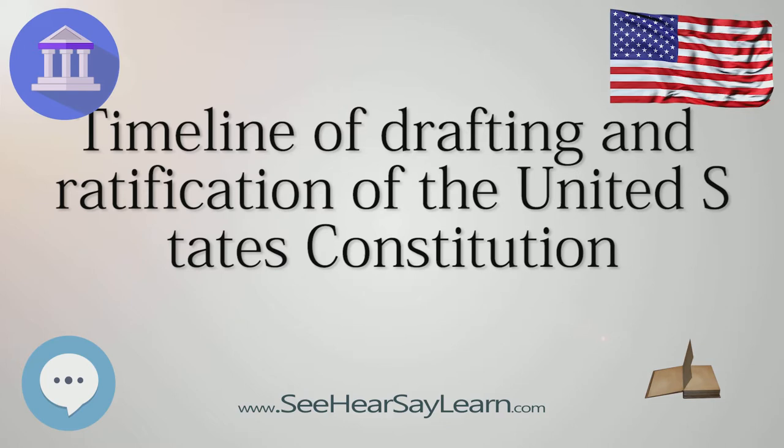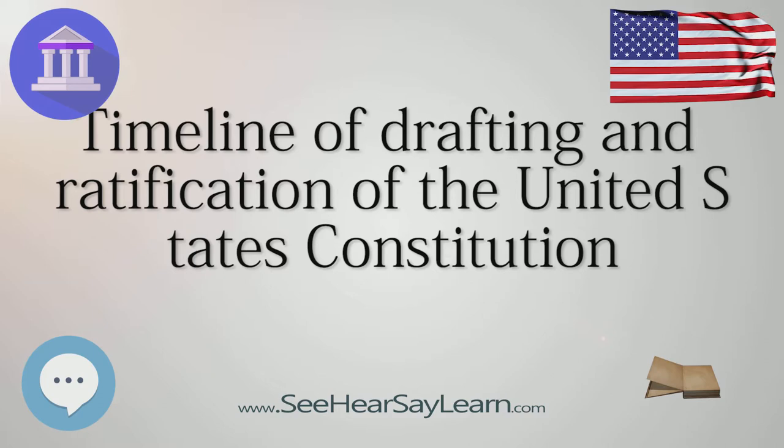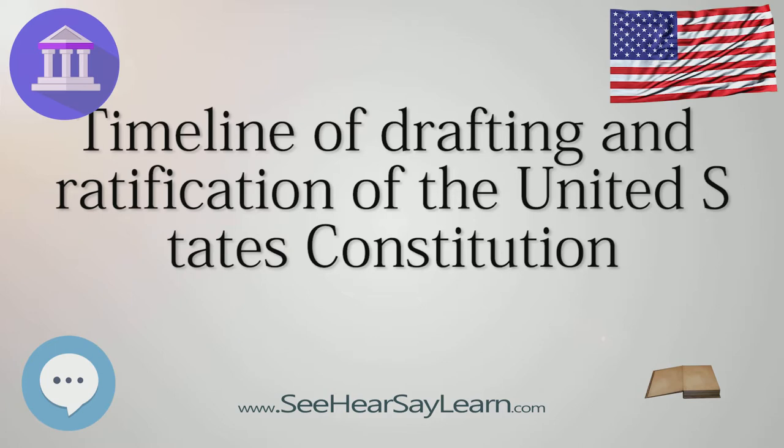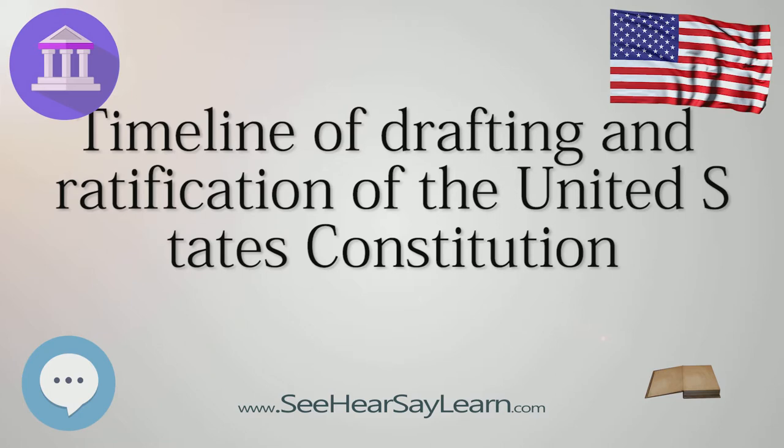July 2: Congress President Cyrus Griffin informs Congress that New Hampshire has ratified the Constitution and notes that this is the ninth ratification transmitted to them. A committee is formed to examine all ratifications received thus far and to develop a plan for putting the new Constitution into operation.